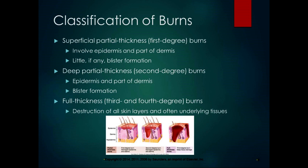A deep partial thickness burn, or second degree burn, affects the epidermis and a deeper part of the dermis, and you frequently get blister formation. I was making coffee and was distracted talking to my mom, and I spilled hot coffee grounds on my hand. They stuck to my hand long enough to give me blisters — a little deep partial thickness burn. That blister formation is the key difference between superficial partial thickness and deep partial thickness burns.